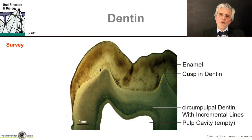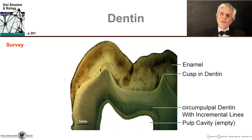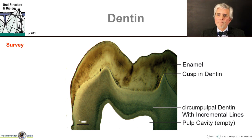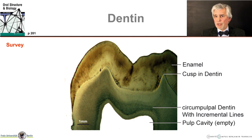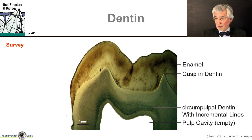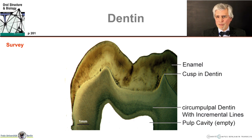To begin with, an overview — something about the topography of dentine. Dentine is normally completely covered by enamel in humans. The incisal edges and the cusps of canines and molars can also be found in the dentine. Here in this section, the pulp cavity is empty. Naturally, the pulp is inside; the subject of pulp is dealt with in a special, separate lecture.